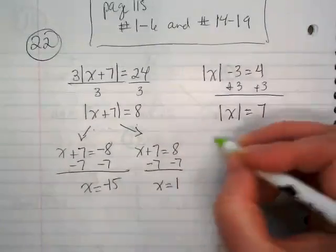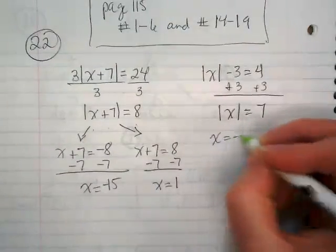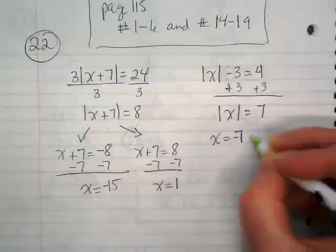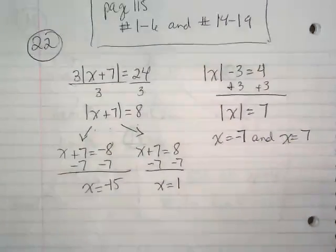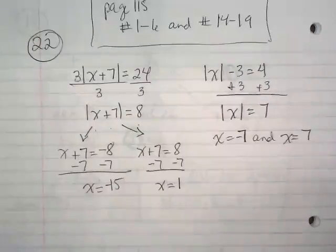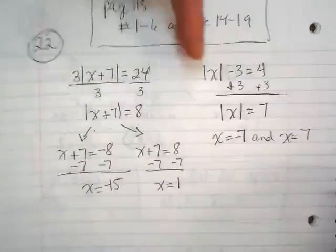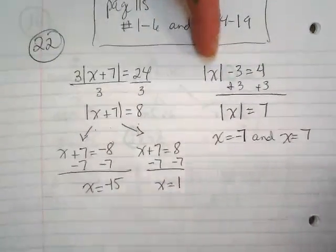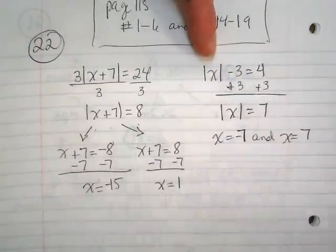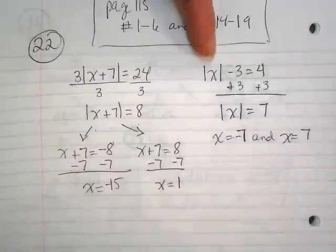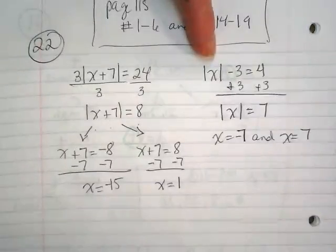I love these ones, because all I have to do is say, x is equal to negative 7, and x is equal to positive 7. And if I go back up here, the absolute value of negative 7 would be 7, and 7 minus 3 is 4, and the same would be true if it was the positive value.